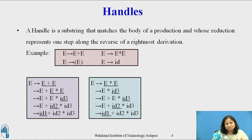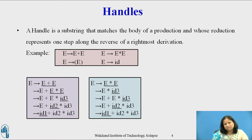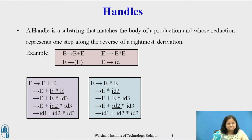As this grammar is ambiguous, there is another rightmost derivation of the same string id1 plus id2 into id3. In this derivation, E plus E is a handle of E plus E into id3, whereas id3 by itself is a handle of this same right sentential form. The first derivation gives * a higher precedence than +, whereas the second gives + the higher precedence.